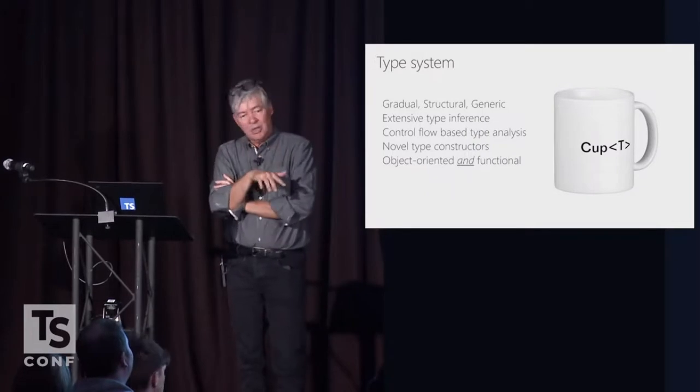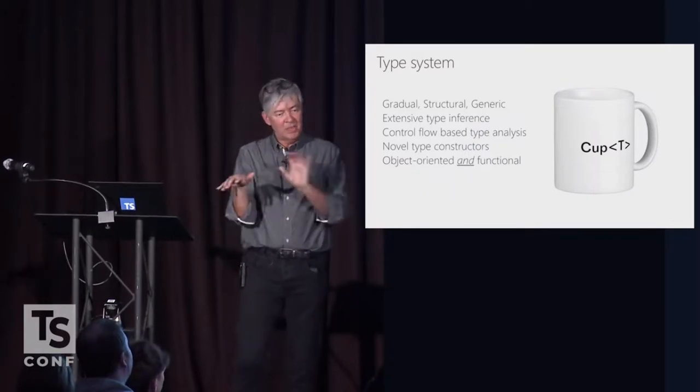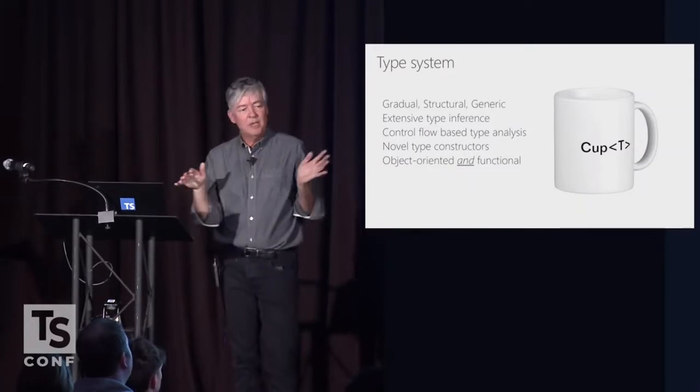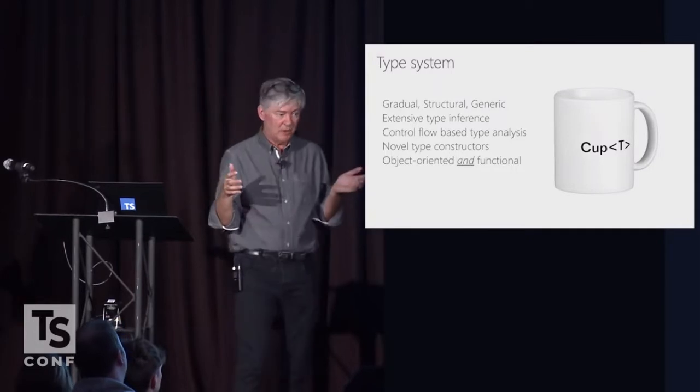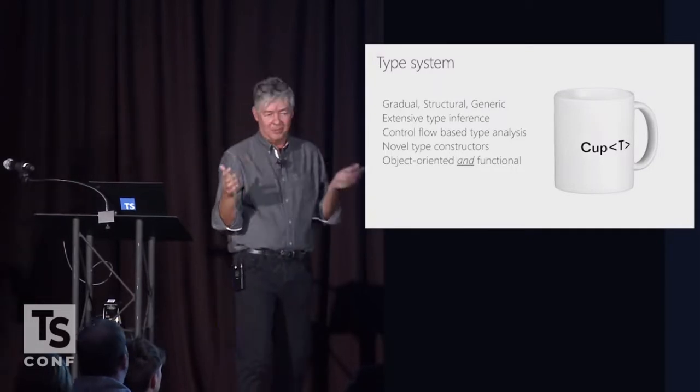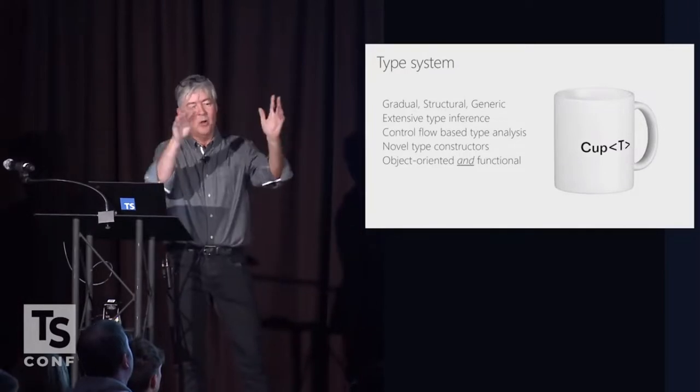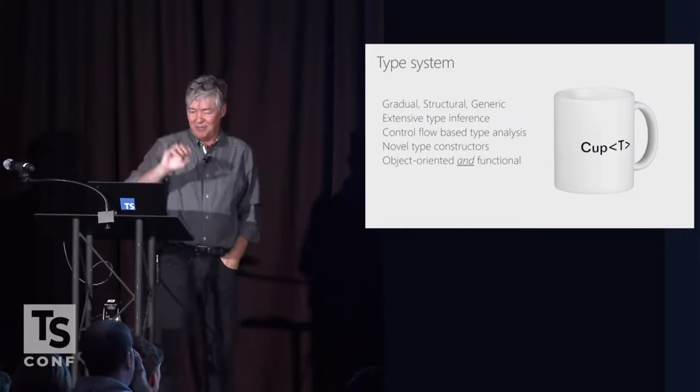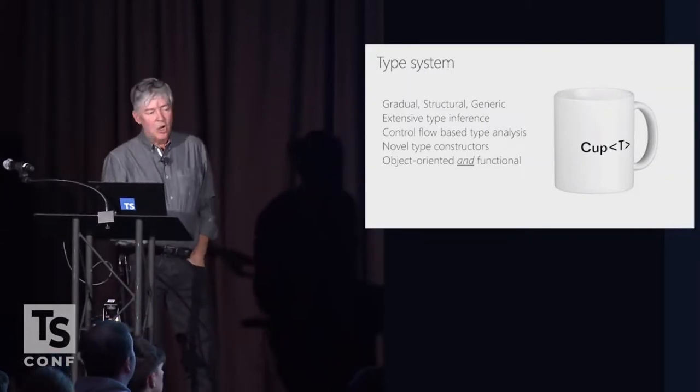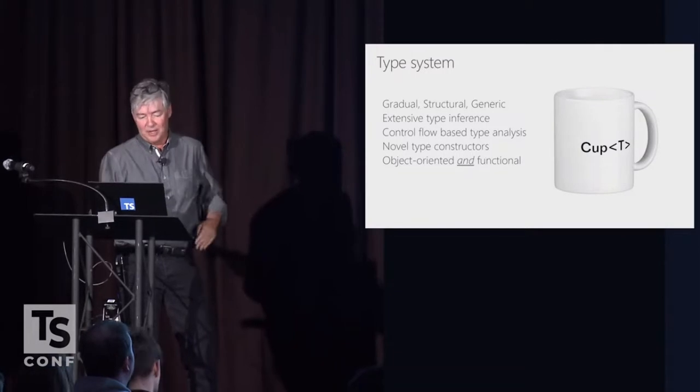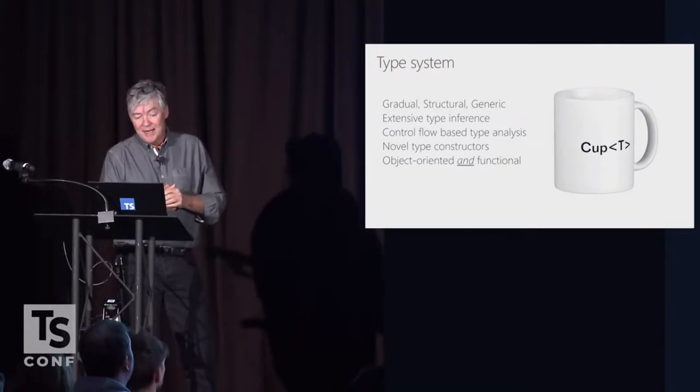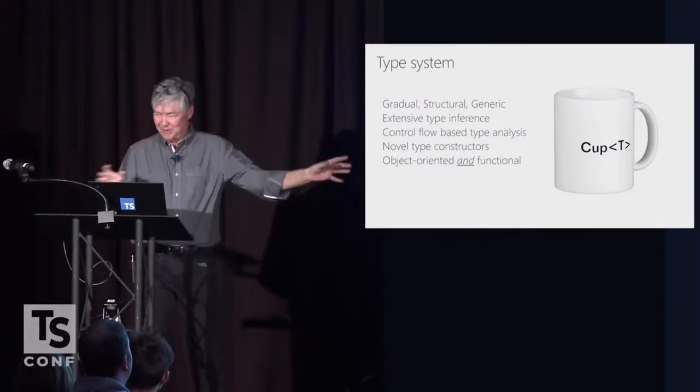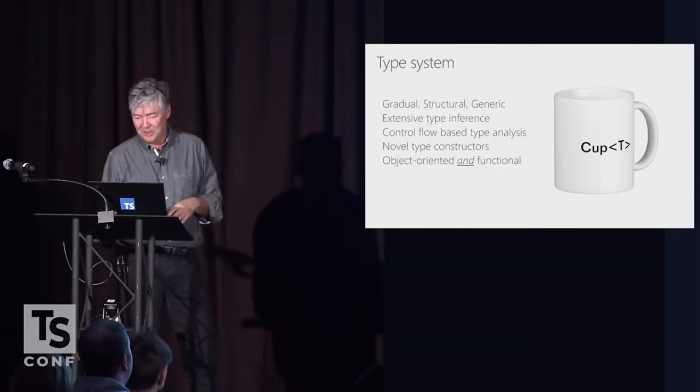TypeScript has a very interesting type system. In many ways, unlike anything I've seen over time, it's gotten more and more esoteric. But it's a gradual and structural and generic type system. And it's really rare to see all of those combined. We have extensive type inference. We do control flow-based type analysis, which you all know from non-nullable types. We have a bunch of novel type constructors, and I'll talk a little bit about those. And then, interestingly, we're both object-oriented and functional, which typically is sort of a religious, either you're one or the other.